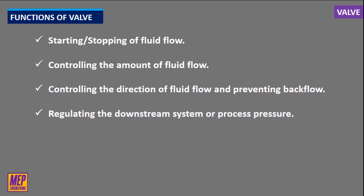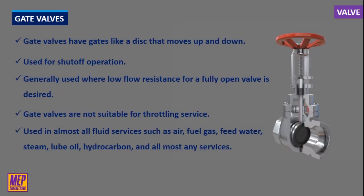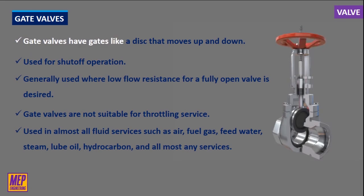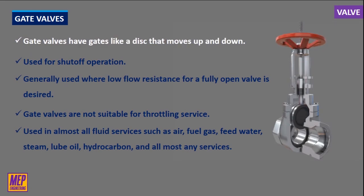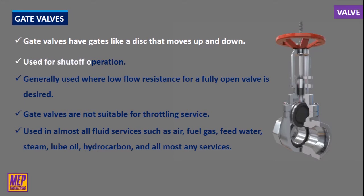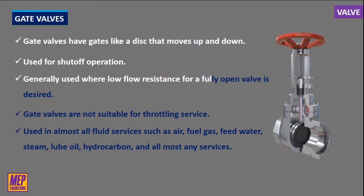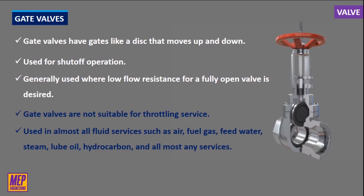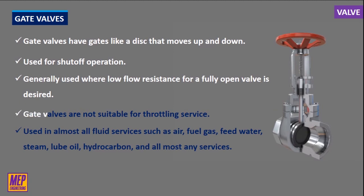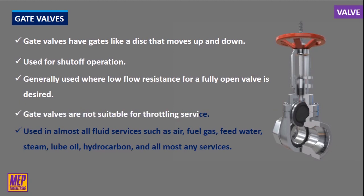Gate valves have gates like a disc that moves up and down with the use of a screwed stem and hand wheel. It is a linear motion valve used for shutoff operation. Gate valves are generally used where low flow resistance for a fully open valve is desired. They are designed to operate either in a fully open or fully closed position. Gate valves are not suitable for throttling service, as extended throttling will damage both the obstructor and seals.